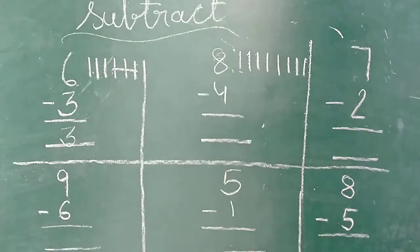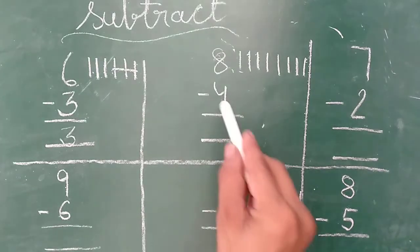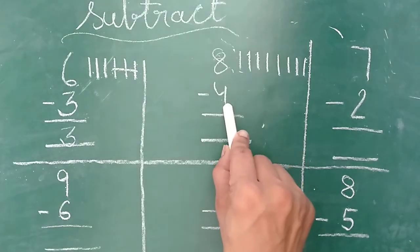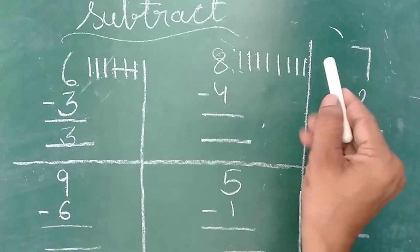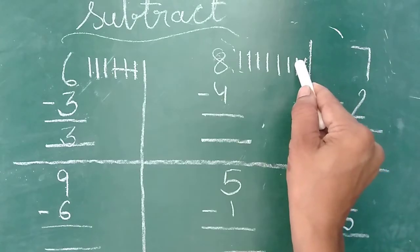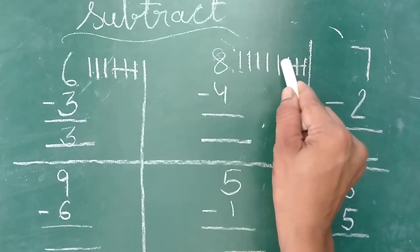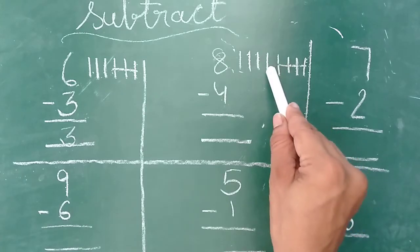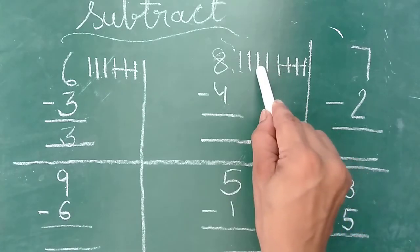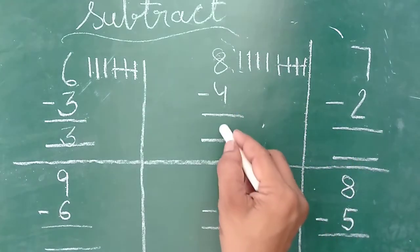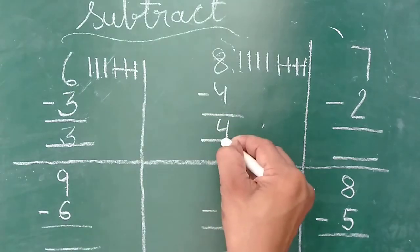Aap kya karenge? Niche walay number ko cut karenge. Niche kitna hai? Four. Toh four lines kaat kiye. Cross kijiye four lines ko. Count karo. One, two, three, four. Four lines cross kar di. Kitni lines bachaye? One, two, three, four. Four lines bachaye. Toh our answer is four.